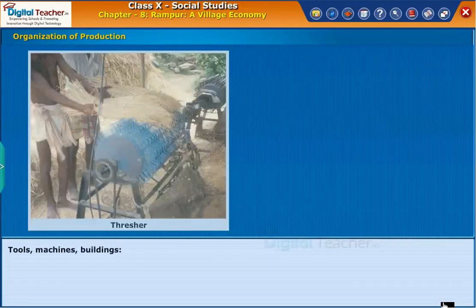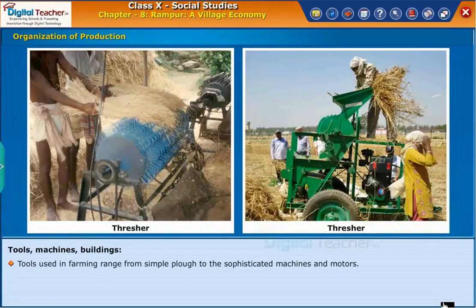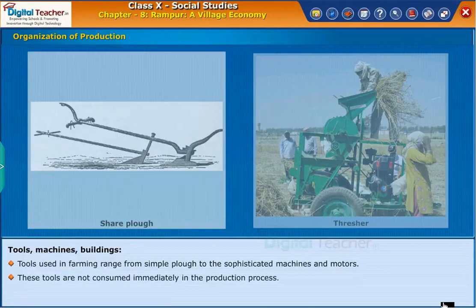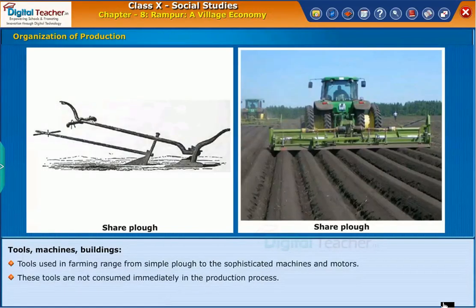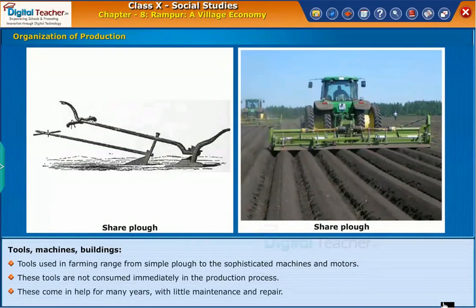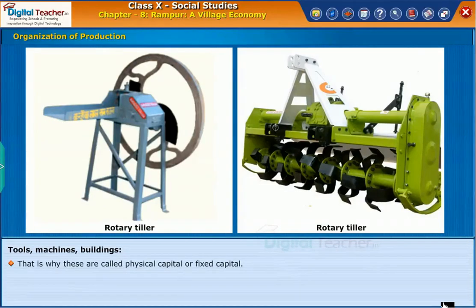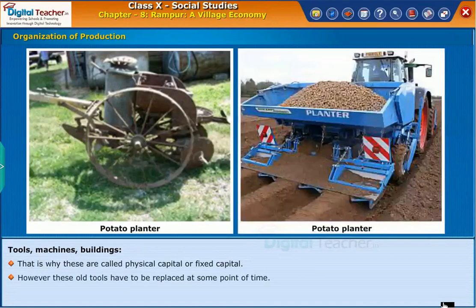Tools, machines, and buildings — tools used in farming range from simple ploughs to sophisticated machines and motors. These tools are not consumed immediately in the production process. They last for many years with little maintenance and repair. That is why these are called physical capital or fixed capital. However, these old tools have to be replaced at some point in time.